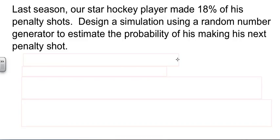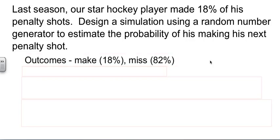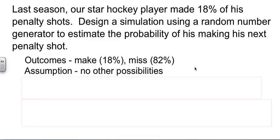What are the outcomes? He can either make or he can miss. And the probabilities are 18% make, 82% miss, because that's what's left. Our assumption is there's no other options. It's either going to be a make or a miss. There's no tie, there's no timeout was called or anything like that.